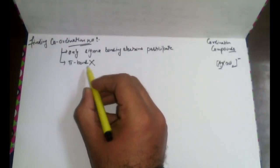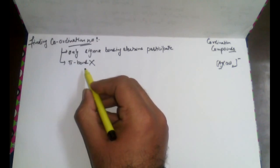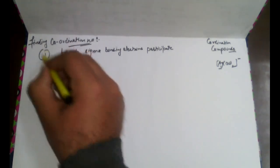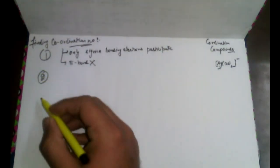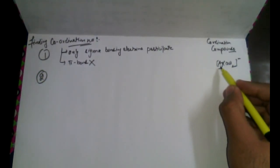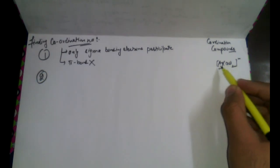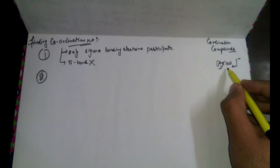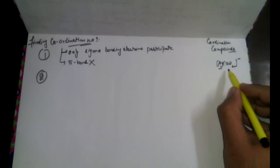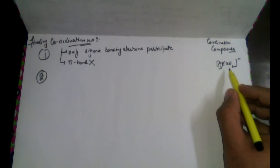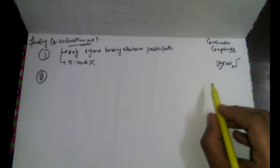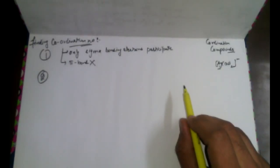I will give you three examples. Whenever we see any compound within the square bracket, we always have to first identify what type of ligand it is — is it unidentate, bidentate, or polydentate? If you identify it properly, then you will easily find out the coordination number.